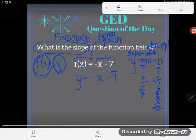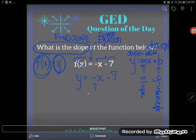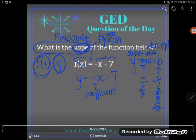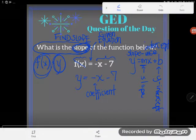I could also see the y-intercept, but this problem has asked me to find slope. So the coefficient on x is the slope.